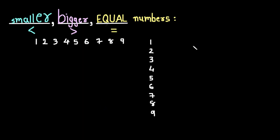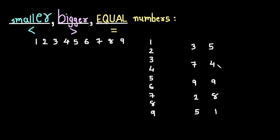Now let's write some numbers and then compare. For example: 3, 5, 7, 4, 9, 9, 2, 8, 5, 1. We have some one-digit numbers and I am putting blanks between them, and we have to put the right symbol to compare them.